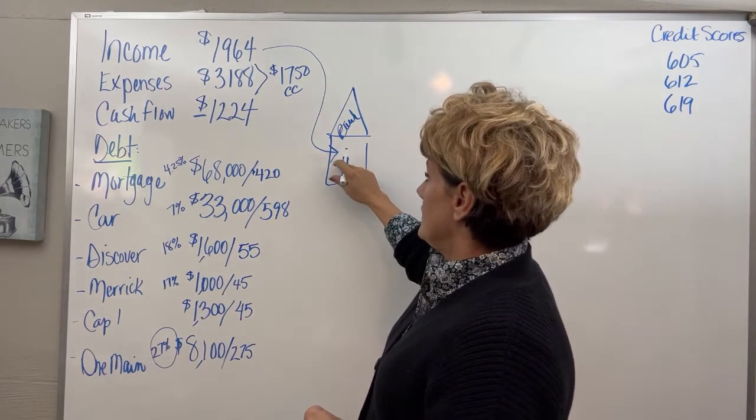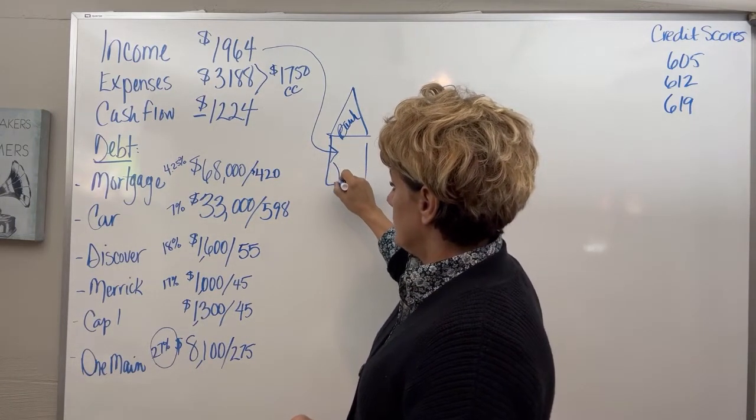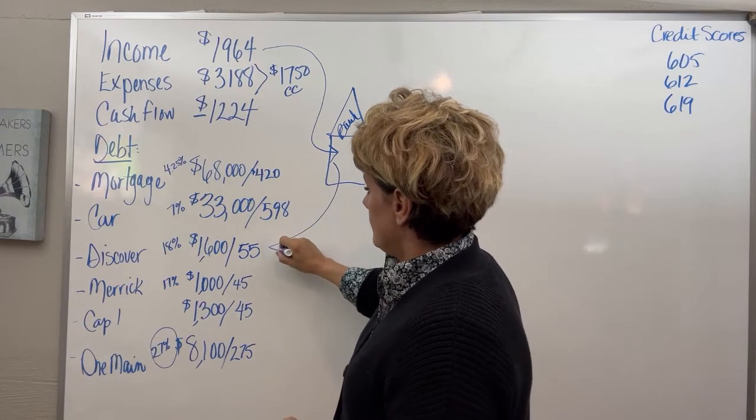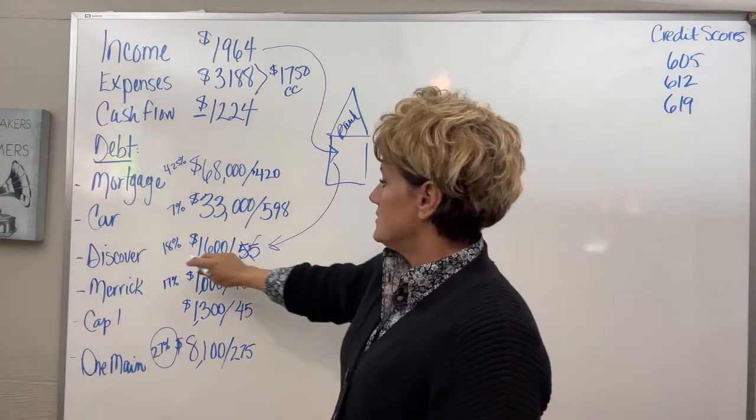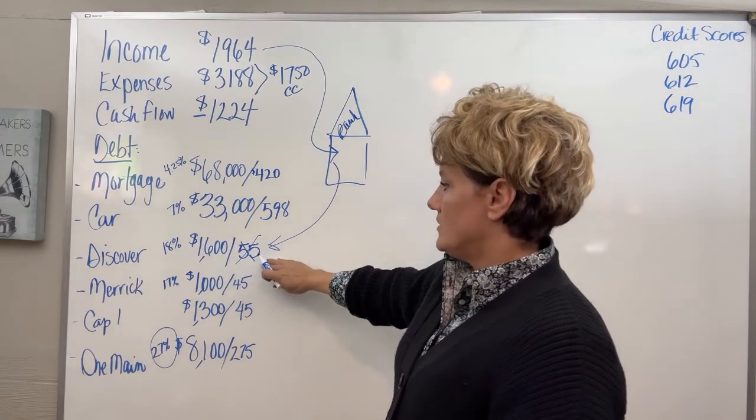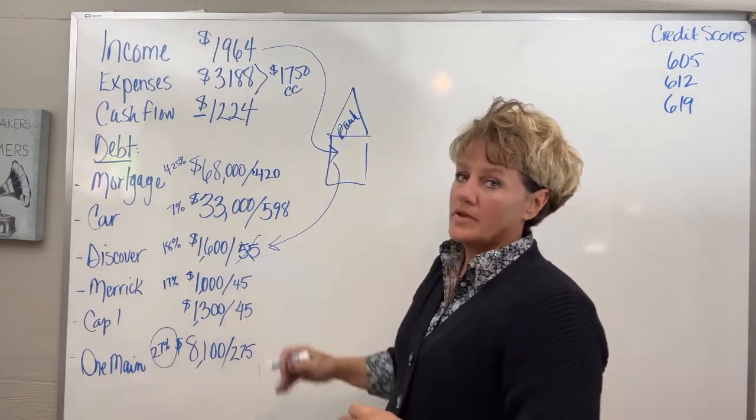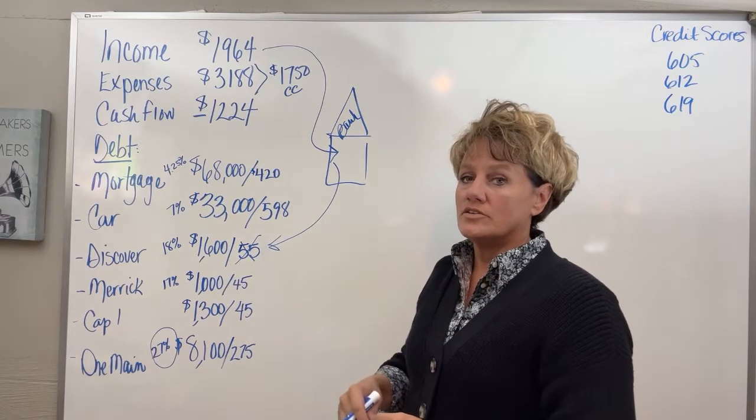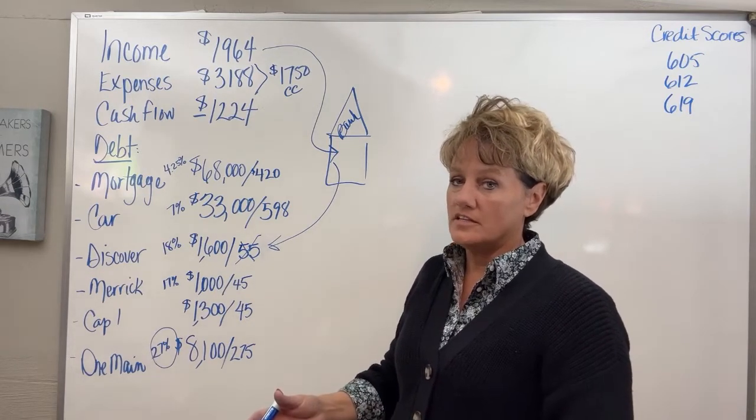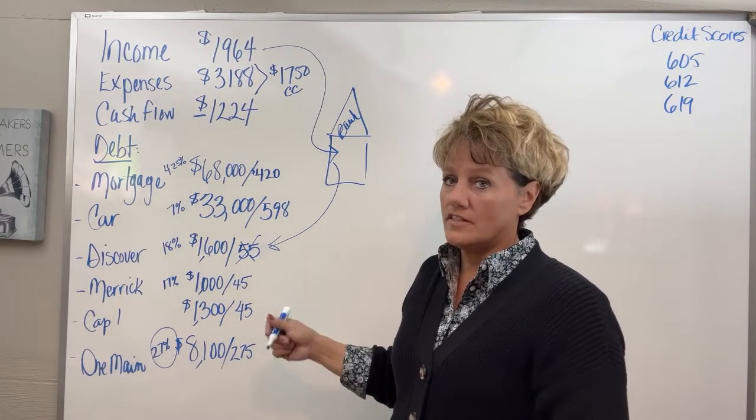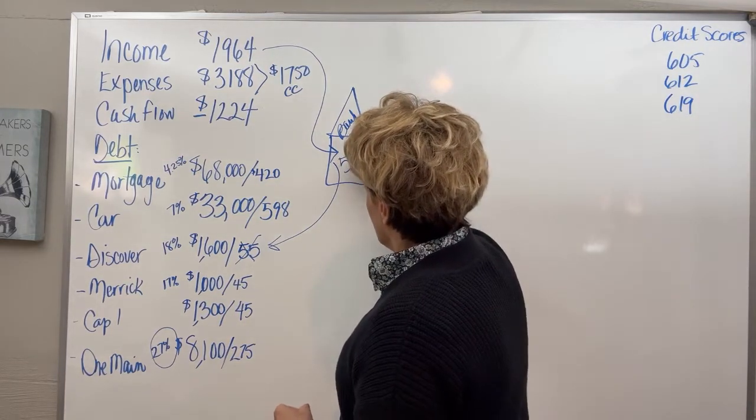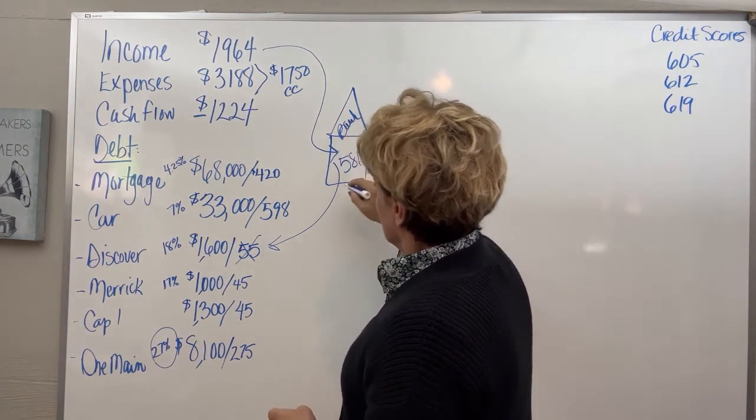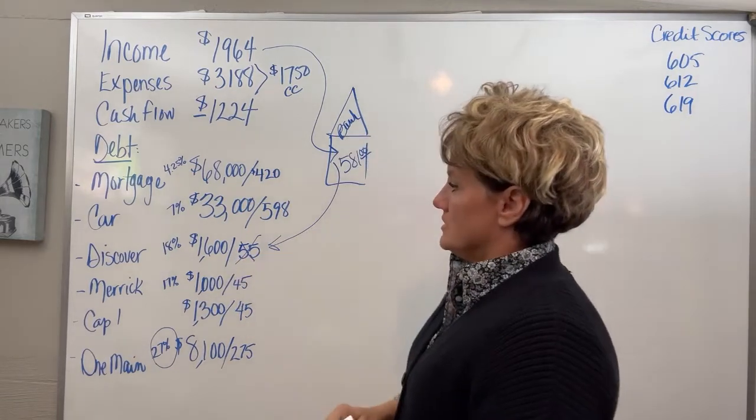then he turns around and puts $581 into this Discover card. It will knock out the $55 payment, because the credit card will consider the payment satisfied due to the income chunk that he did. So $581 will go into the Discover.